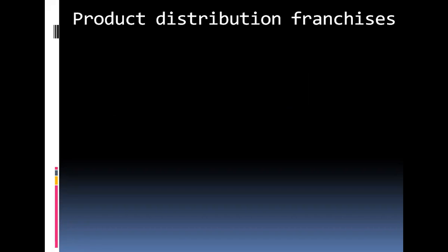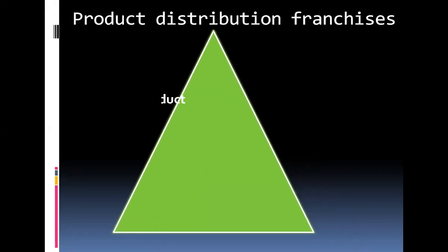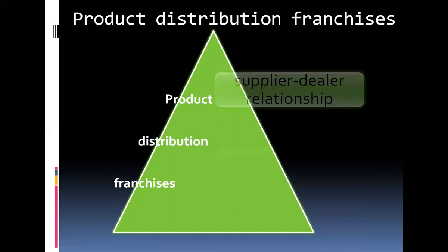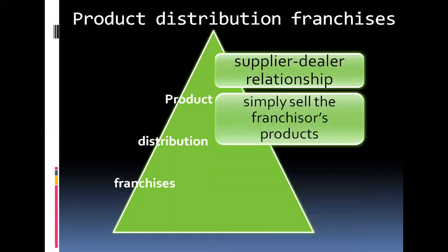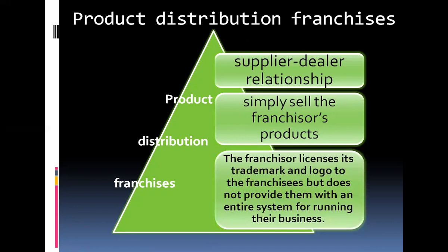We will discuss first the product distribution franchises. Product distribution franchises simply sell the franchisor's products and are supplier-dealer relationships. In product distribution franchising, the franchisor licenses its trademark and logo to the franchisees, but typically does not provide them with an entire system for running their business.